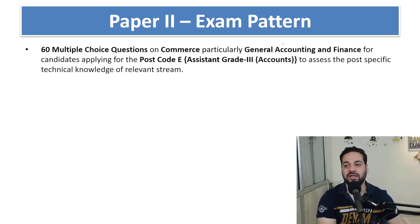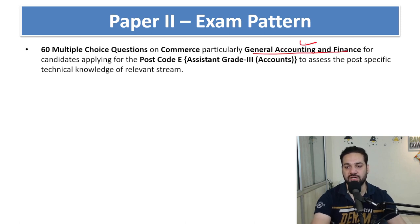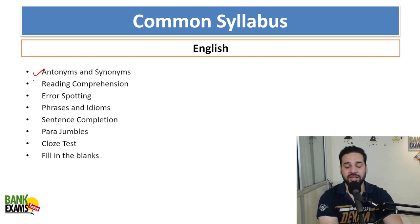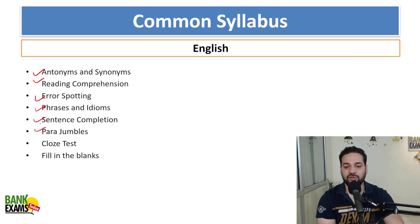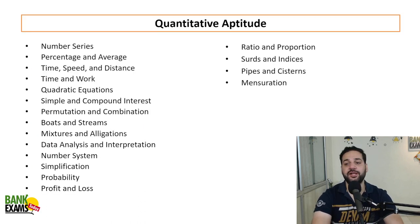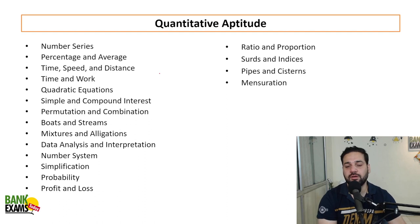Paper 2 is for Accounting and Finance and we will cover that fully. The English syllabus for both phases includes synonyms and antonyms, reading comprehensions, error spotting, phrases and idioms, sentence completion, para jumbles, cloze test, and fill in the blanks.